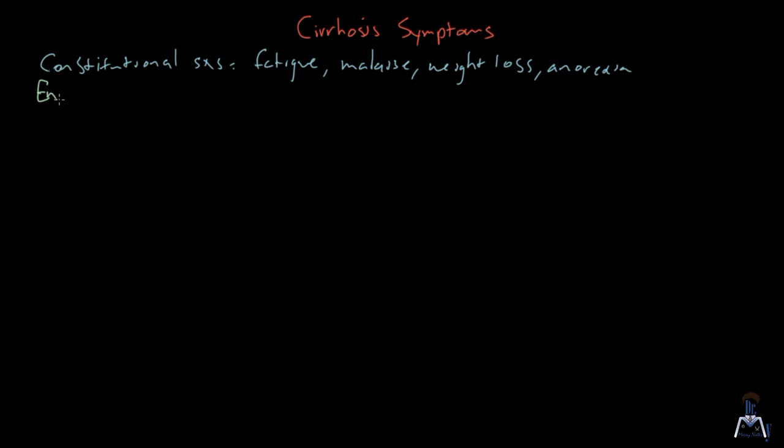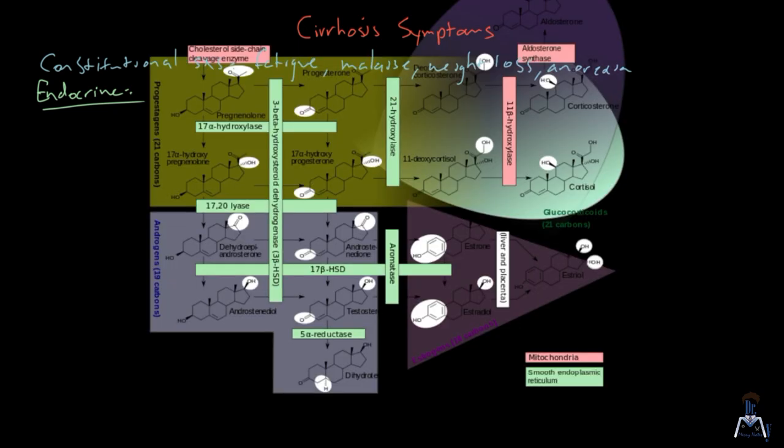We'll start with endocrine. One complication that produces several symptoms is the imbalance of sex hormones in patients with cirrhosis. For this, we will look at a diagram. You're all likely familiar with this diagram of steroidogenesis, and it was a diagram that was a bit intimidating, and you didn't want to memorize it, but you didn't know if you needed to memorize it.